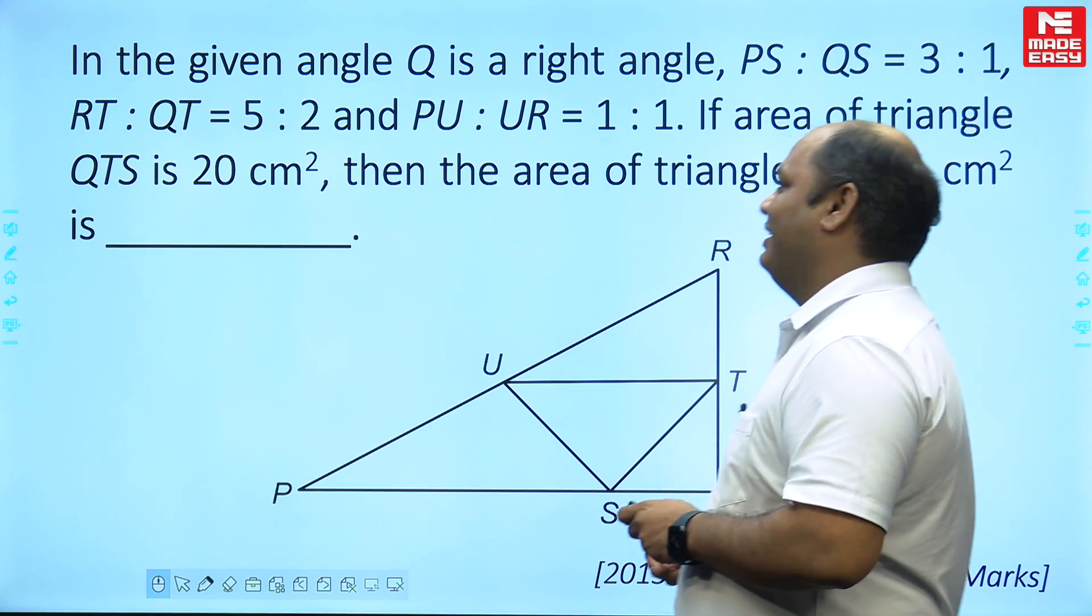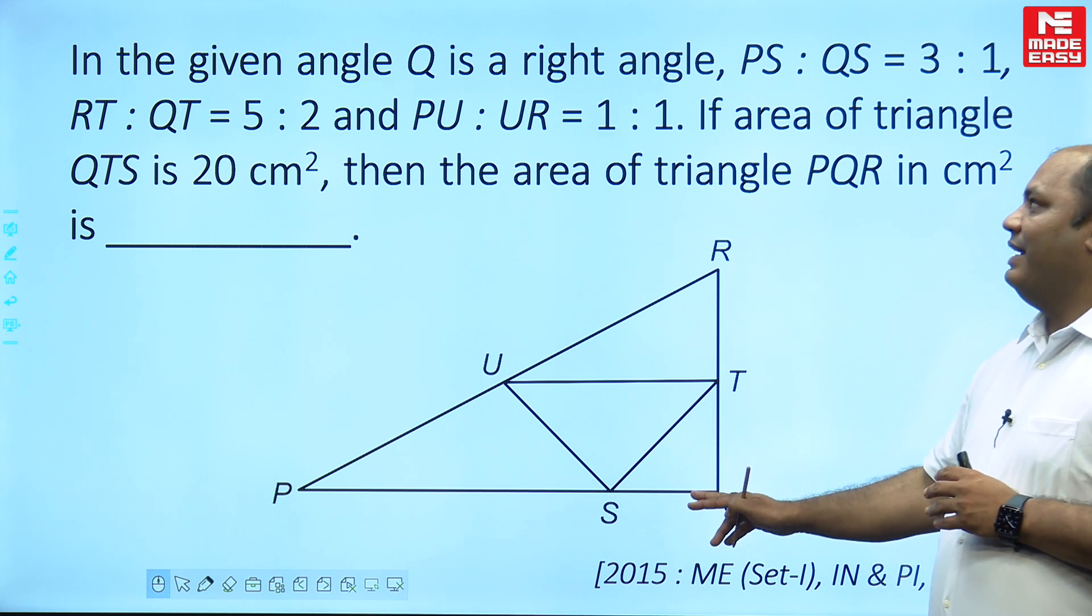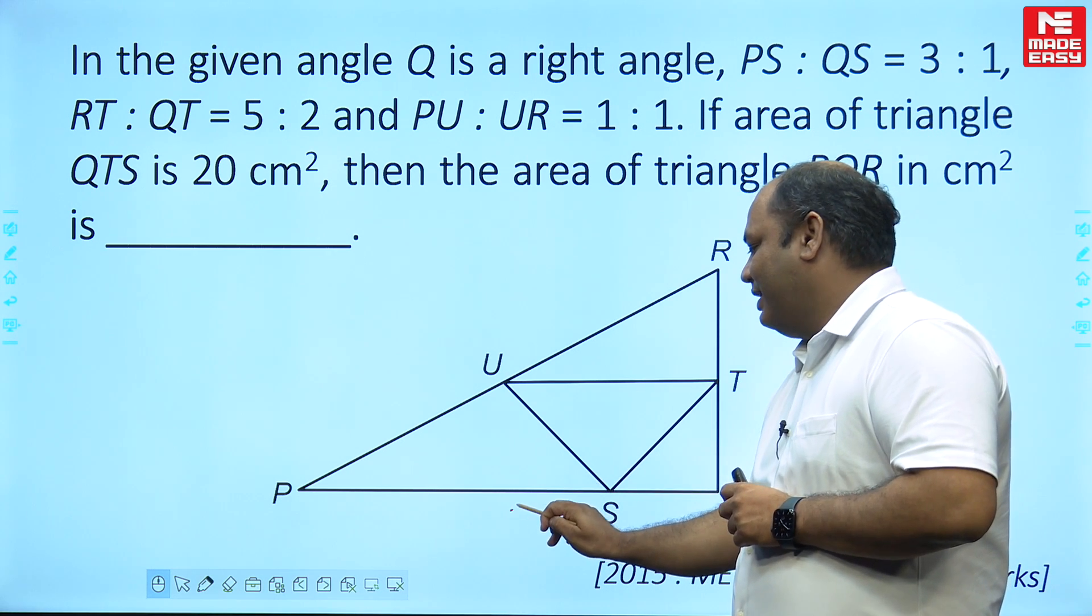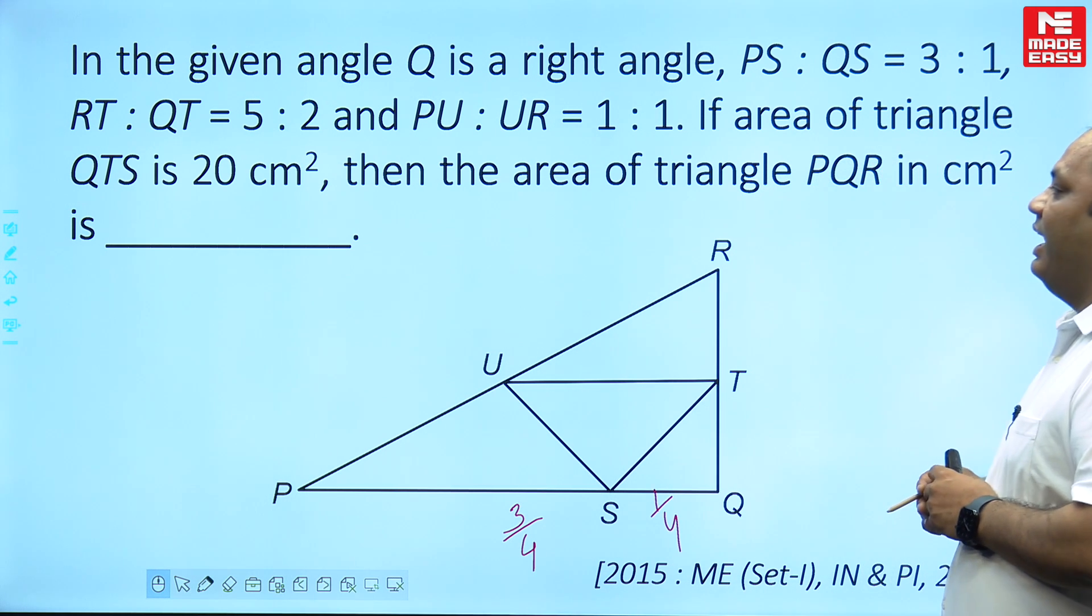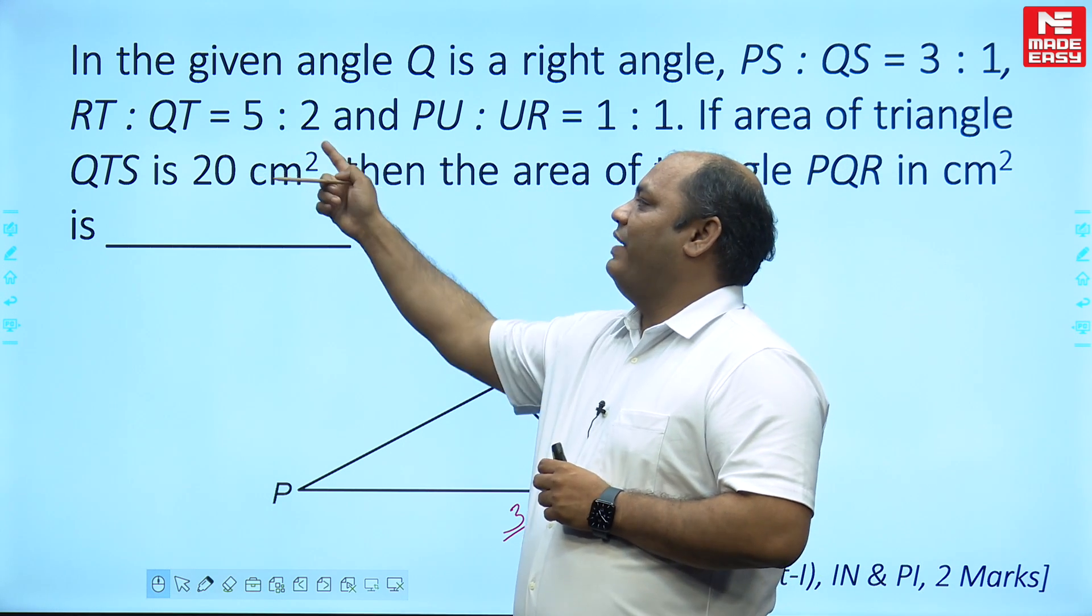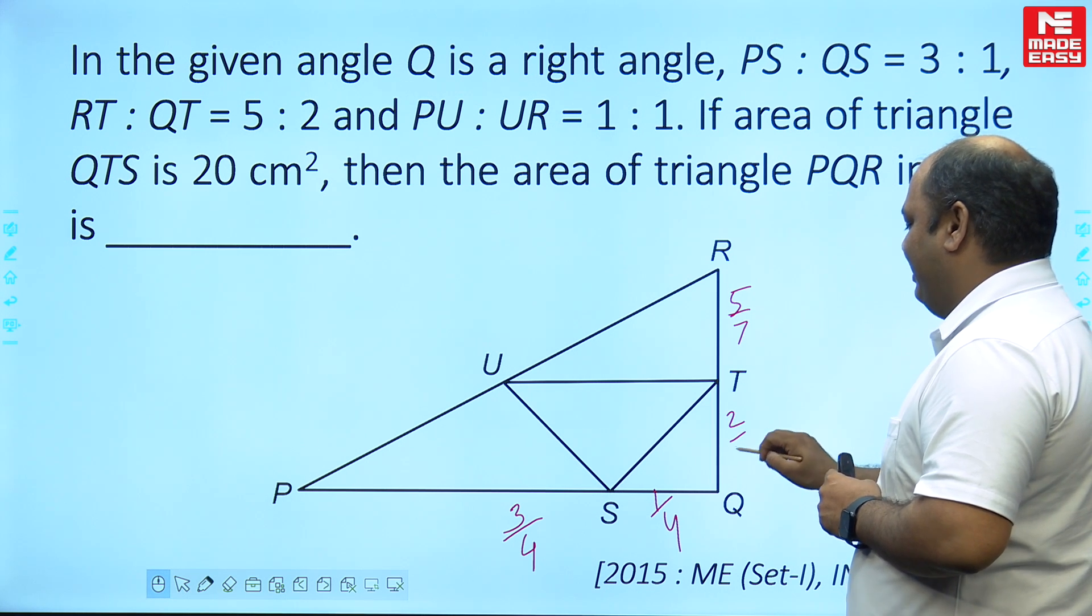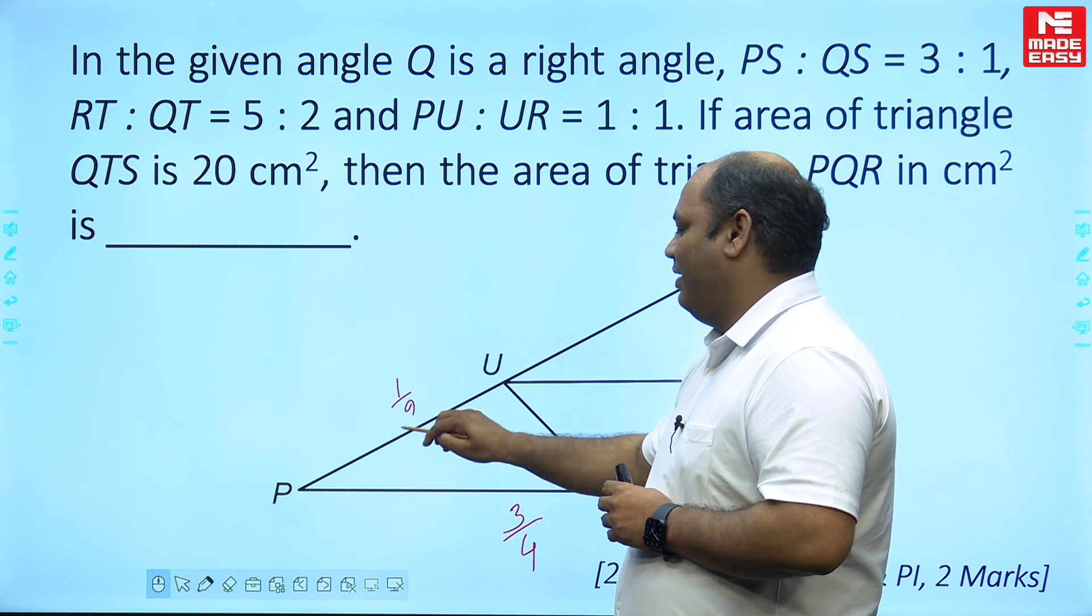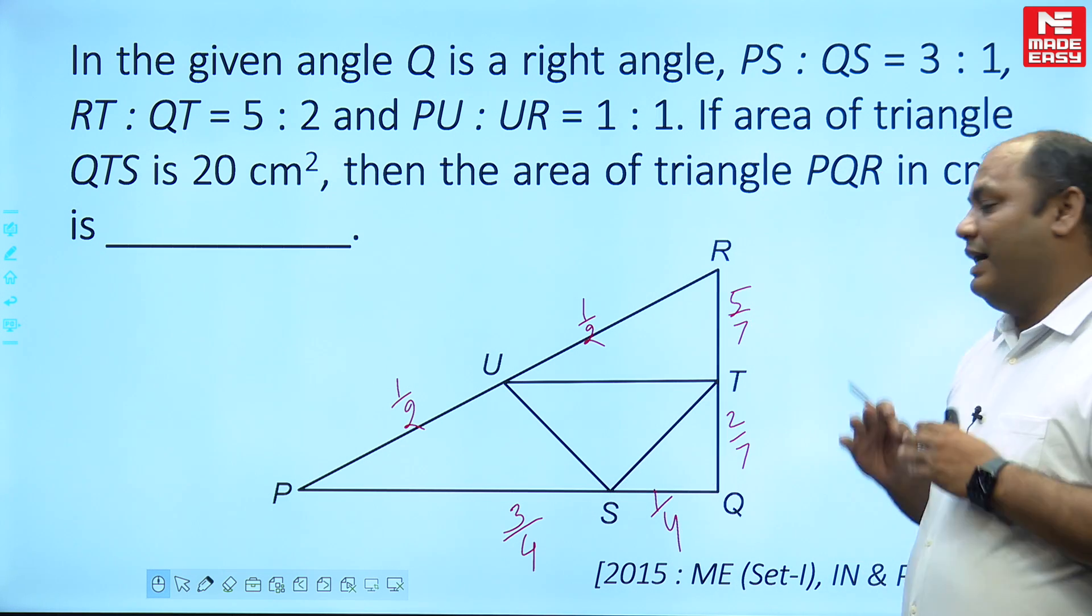So let us look at the question. Question says there is a triangle given as PQR where angle Q is a right angle. Where PS to SQ is in the ratio 3 is to 1. So you can say this is 3/4 area and this is 1/4 portion. Similarly RT to QT is in the ratio of 5 is to 2, so upper part is 5/7 and lower part is 2/7. And then PU to UR is 1 is to 1, so this part is half and this part is also half.